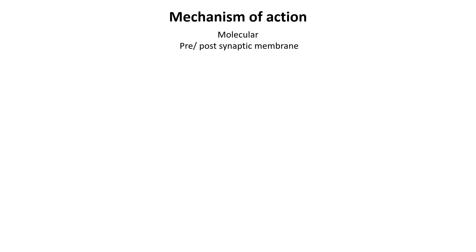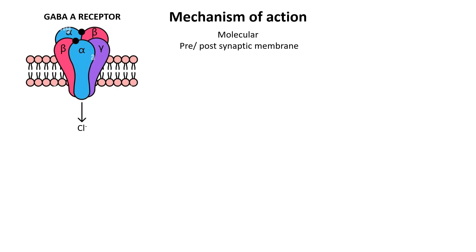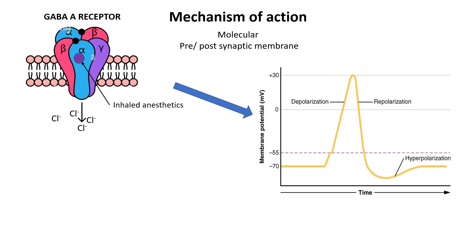At the molecular level, general anesthetics act on specific targets in the central nervous system, like the alpha subunits of the GABA-A receptor. By prolonging GABA-mediated chloride currents, inhalation anesthetics enhance chloride conductance, causing hyperpolarization and reducing postsynaptic neuronal excitability.